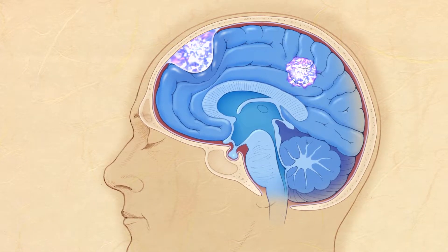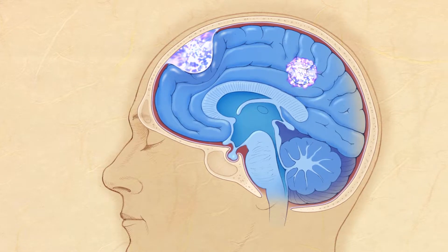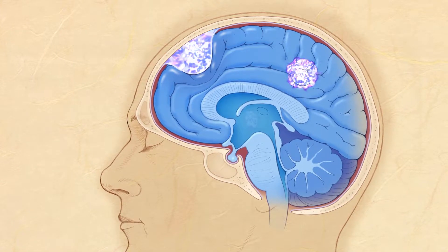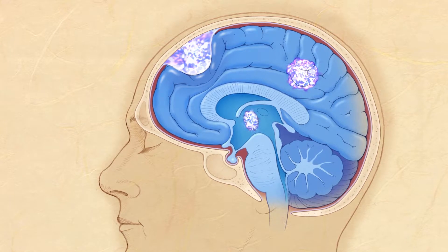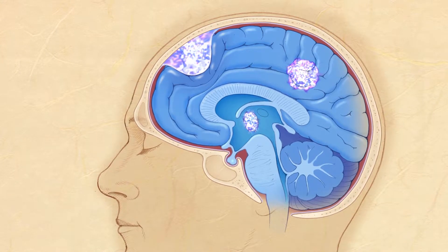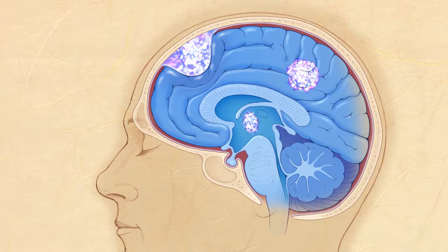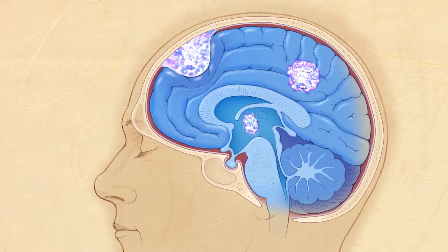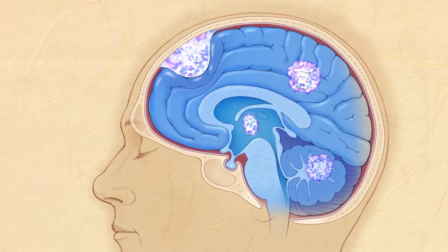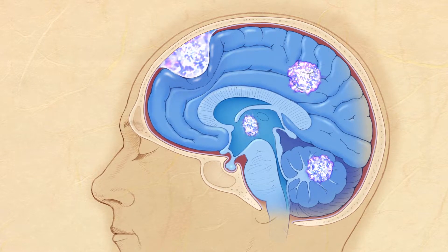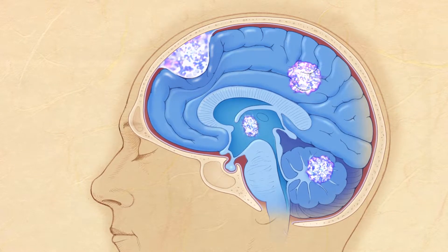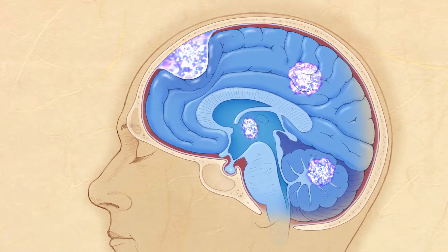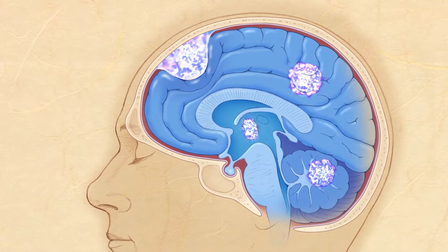There are other specialized tumors that arise in other parts of the brain, including the ventricles, which contain fluid within the brain. A very important and common cause of tumors overall in adults are metastatic tumors from tumors elsewhere in the body, and these can develop in virtually any part of the brain.